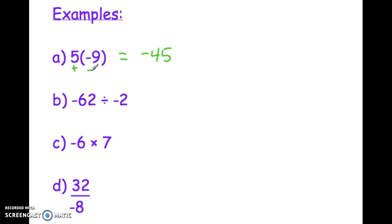We have -62 divided by -2. Well, half of 62 is 31, and because it's a negative divided by a negative, we get a positive answer. Signs are the same, positive answer.